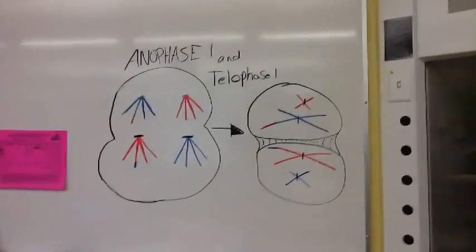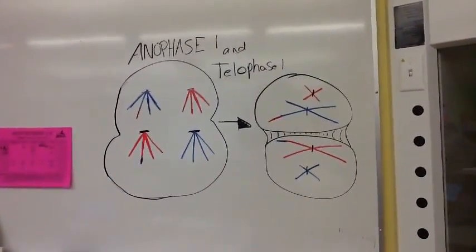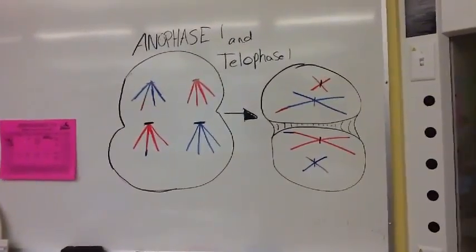After the crossover, the chromosomes separate and are put on opposite poles. The opposite chromosomes are switched to the top of the opposite chromosome.